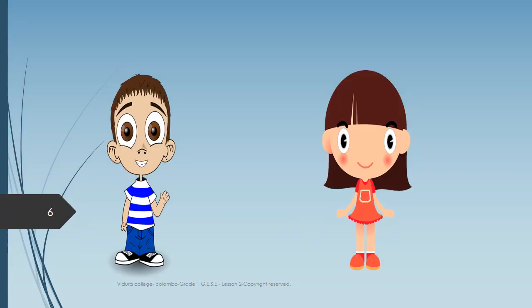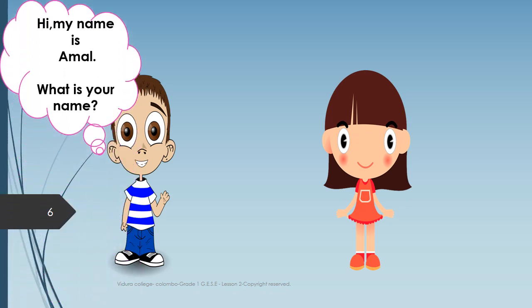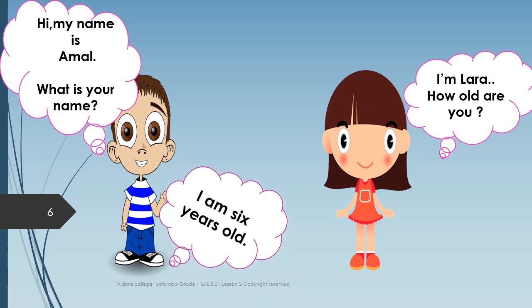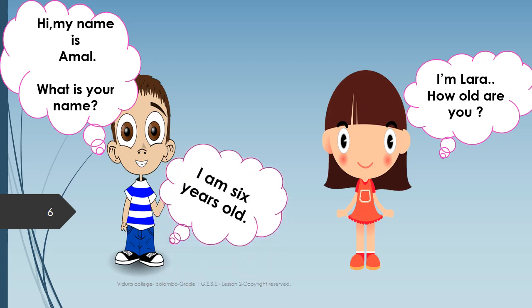Look here. They are still talking to each other. Hi. My name is Samal. What is your name? I am Laura. How old are you? I am six years old. Oh, they are going to know each other well. So children, this is the way that we can start a friendly conversation. You have already learned them. Please do not forget them and go through these dialogues again and again.